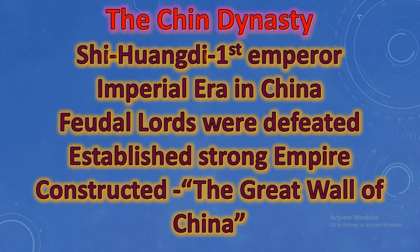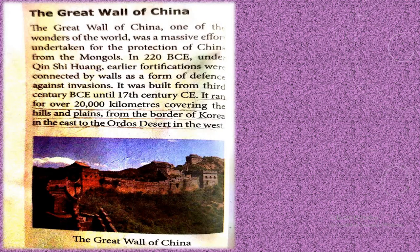He demolished all the fortified walls in the country and constructed a single wall to avoid invasion from the Mongols. It is called one of the Seven Wonders of the World — the Great Wall of China — constructed by Qin Shi Huang, that is Shi Huangdi, between the 3rd century and 17th century, stretching about 20,000 kilometers across hills and plains.